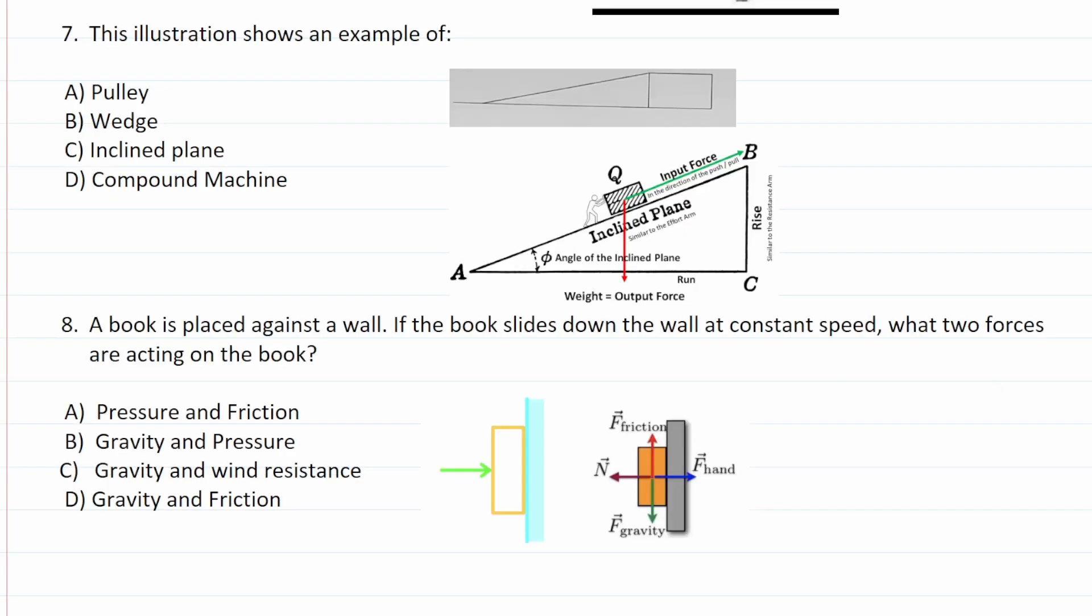Number seven says, the illustration shows an example of. So we're talking about this illustration right here. In physics, this is called an incline ramp. So you just have to know that this is an incline ramp. Again, in that study guide, they go over what pulleys, wedges, and simple machines are. So please read that study guide when you get a chance. You just had to recognize that this is an incline ramp in this case.